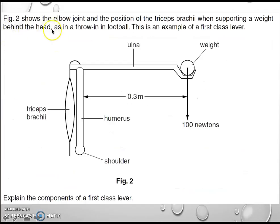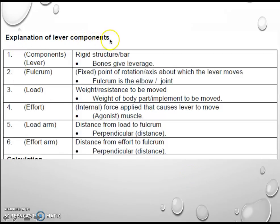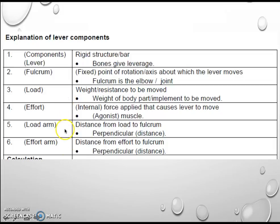Here's another exam question: figure two shows the elbow with the tricep brachii when supporting a weight. This is described as an example of a first class lever — just accept that and explain the components of a first class lever. The model answer describes what each component is and importantly adds in the load arm and the effort arm to get full marks. So pause the screencast, go back over it, and make sure you understand the load arm, the effort arm, and the advantages and disadvantages linked to each class of lever. Thanks very much — speak to you soon, bye bye.